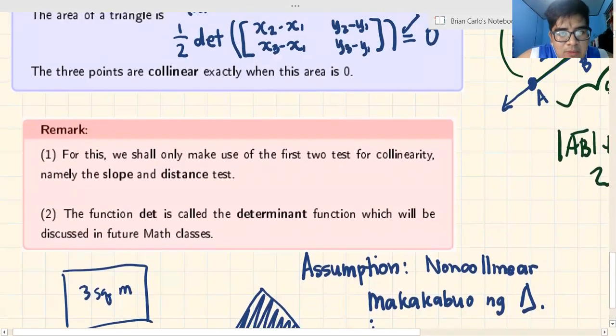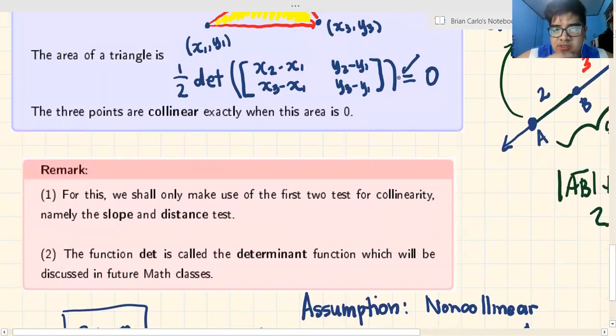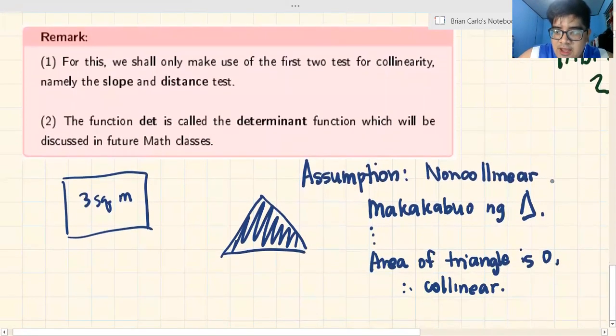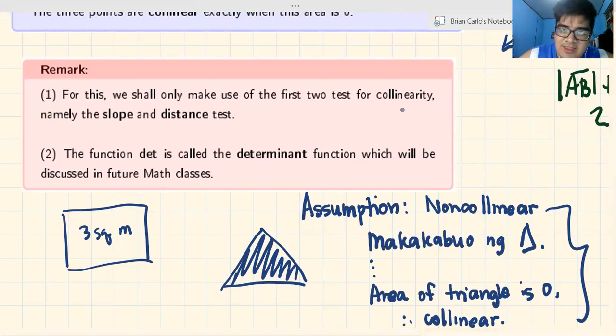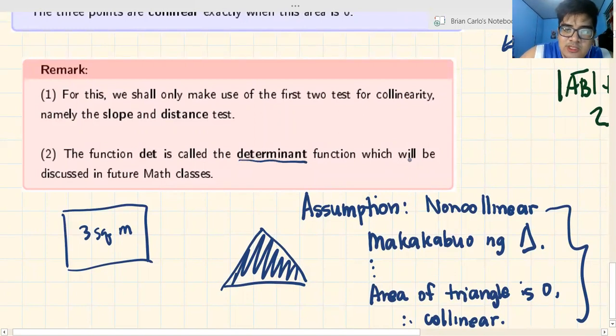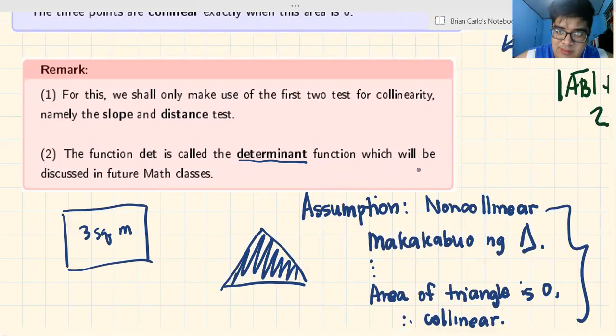I will not require you to use this method because you don't know what a matrix or determinant is. I just want you to appreciate the concept. Remark: For this, we shall only make use of the first two tests for collinearity - slope and distance - because you know how to get slope and use distance formula. The determinant function will be discussed in future math classes, like advanced engineering mathematics.